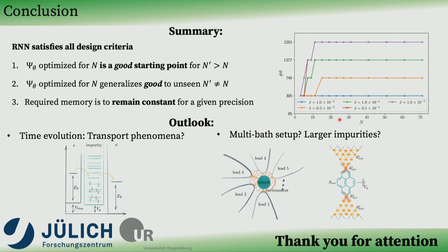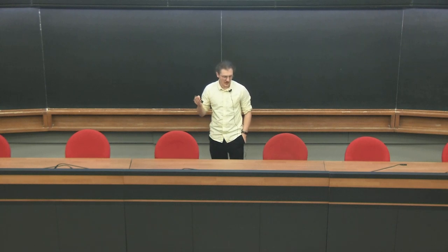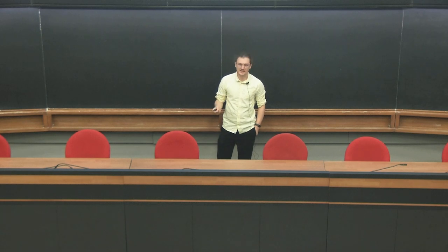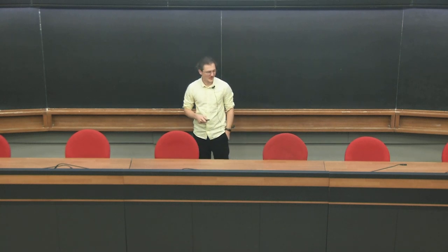Right, and with that, I'm actually at the end of the presentation. Just to reiterate one more time, our recurrent network is capable of doing the iterative optimization, as we were looking for. It can also generalize to different lengths of the Wilson chain. And finally, the number of required parameters does in fact saturate at a certain point for a certain Wilson chain length, just as we wanted. And then, some outlook. What we really want to do with this is to study some transport phenomena, some non-equilibrium phenomena, and of course go to system configurations that are hitherto intractable with methods like MPS, numerical renormalization group, or even sophisticated continuous time quantum Monte Carlo approaches. Right, thank you very much.